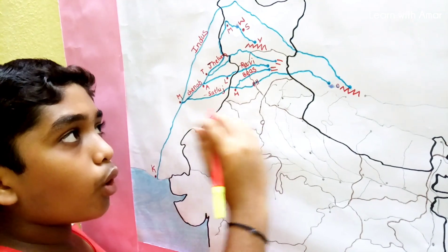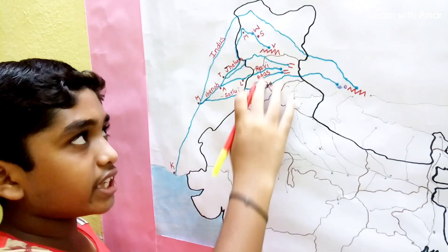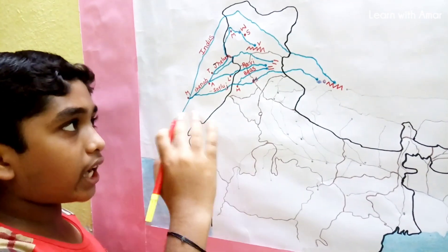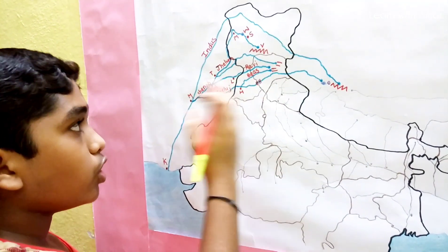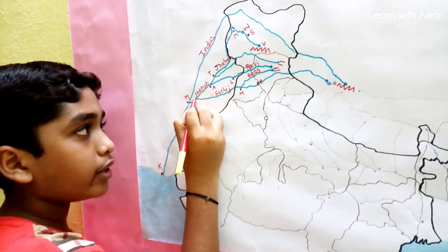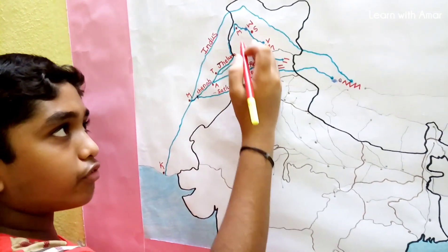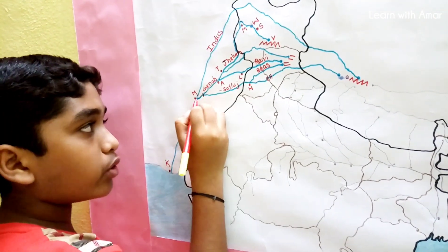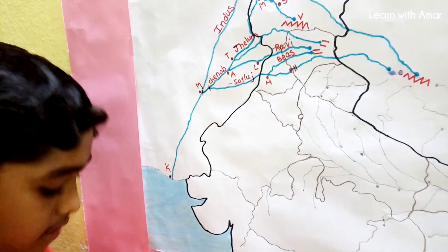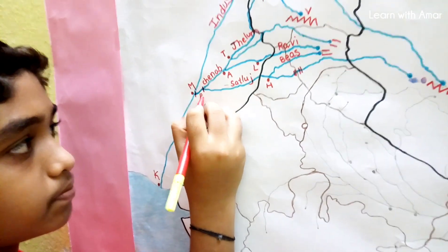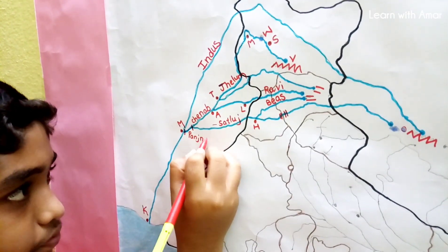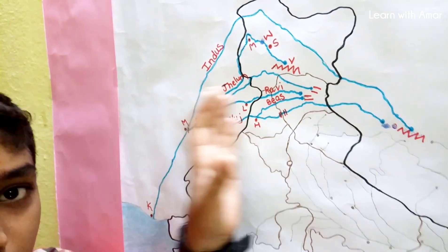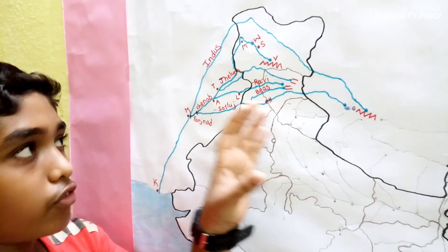Among these five tributaries, only Beas flows completely within India. At the confluence point, the waters of all five tributaries meet, and from that point onward the combined river is called Panchnad. With this, we have completed the drainage system of Indus.